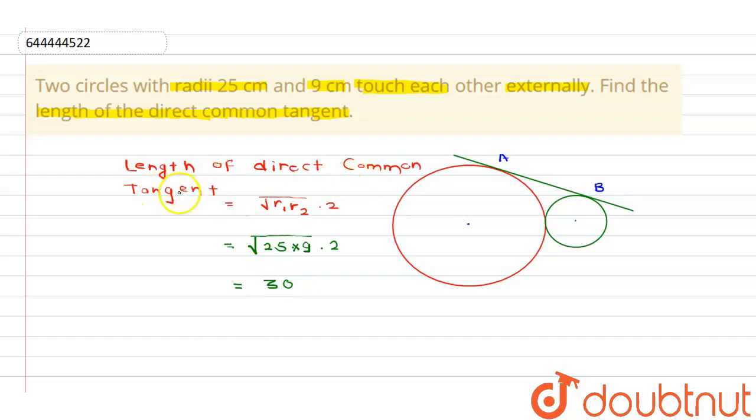Therefore length of direct common tangent is equal to 30 cm. Length of AB is 30 cm. This is our final answer.